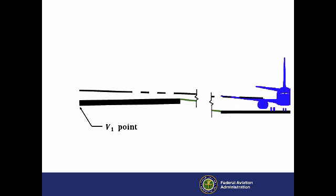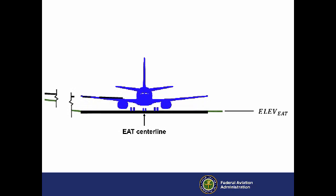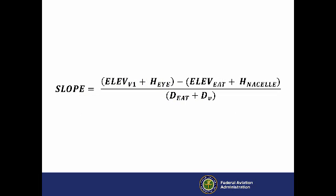Use the dimensions described in the AC and as shown here to find the slope from the pilot's eye to the top of the screen, including elevation V1, the elevation of the runway centerline at the V1 point, HI, the height of the pilot's eye above the runway, elevation EAT, the elevation of the centerline of the EAT, and H nacelle, the height of the engine nacelle above the taxiway. These dimensions are used to form the equation seen here.